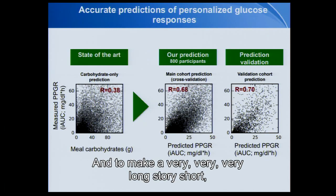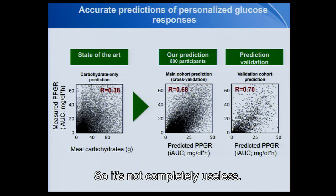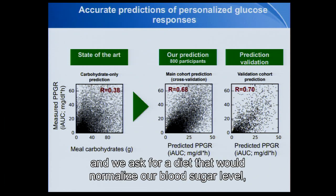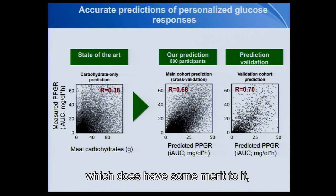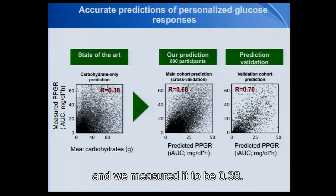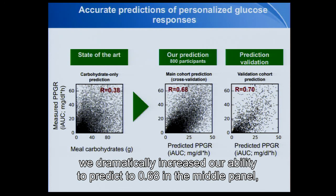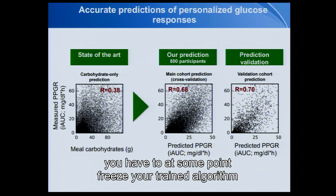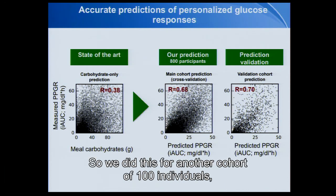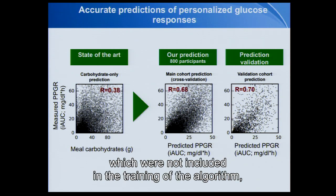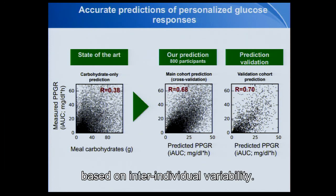To make a very long story short, this is the gist of the results. On the left, you can see the predictability of the gold standard approach today — when we ask our physician or dietitian for a diet to normalize blood sugar, we usually get a low-carbohydrate diet, which does have some merit, but the predictability of two different foods is very poor at 0.38. In contrast, when we used our measurement-based, machine learning-based approach, we dramatically increased our ability to predict to 0.68. We then froze the trained algorithm and applied it on a new blinded cohort of 100 individuals not included in the training, and the predictability was equally good — almost to the level of the ceiling based on inter-individual variability.